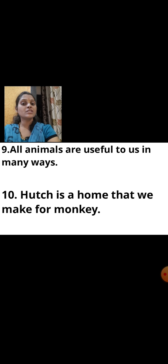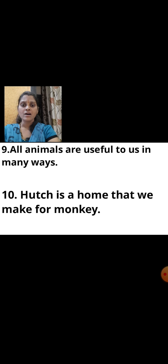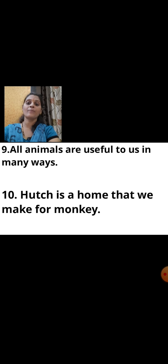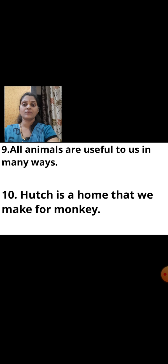Next statement: hutch is a home that we make for monkey. This is false. Monkeys live on trees. A hutch is the house we make for rabbit. Rabbit itself makes a burrow, but the home we provide for rabbit is called a hutch. So the statement is false.